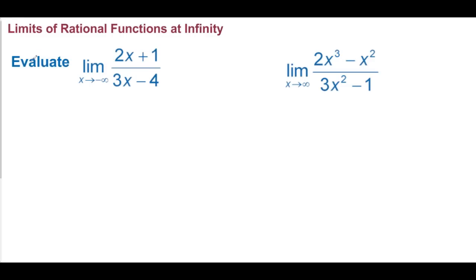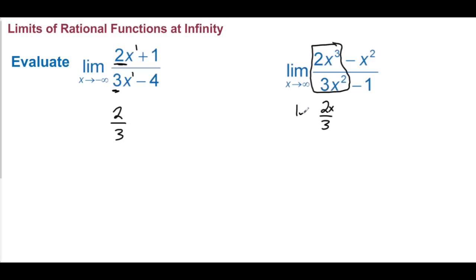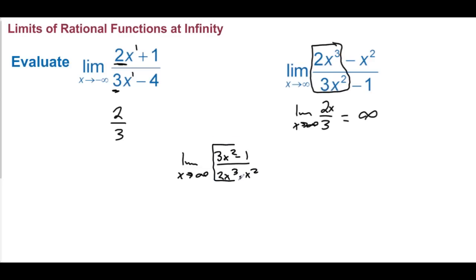Limits of rational functions at infinity. Limit as x approaches negative infinity of (2x + 1)/(3x − 4): when the powers are the same, look at the leading coefficients, so this levels off to 2/3. Limit as x approaches infinity of (2x³ − x²)/(3x² − 1): the leading terms give 2x/3, and as x approaches infinity this is infinity. Limit as x approaches infinity of (3x² − 1)/(2x³ − x²): the leading terms give 3/(2x), and this goes to zero.